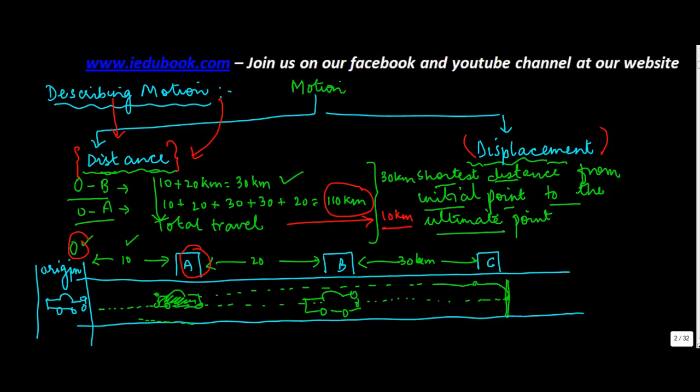So if the car instead of stopping at A would have come back and stationed again at the origin, then the displacement would have been 0 even though the distance would have been from O to C and back from C to O which is 120 km. So we say that the car was in motion, the total distance covered was 120 km, however the displacement of the car from its original position was 0.